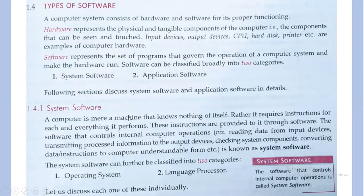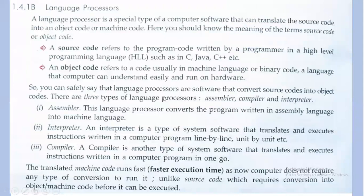There are mainly two types of software: system software and application software. System software is the basic need for any computer or system to run — for example, the operating system and language processors. Application software is made for specific tasks, for example, word processing for documentation, Excel for calculations or accounting, and PowerPoint for presentations. Language processors include assembler, interpreter, and compiler, which are used to convert one language into machine language so the machine can understand what has been input by the user.